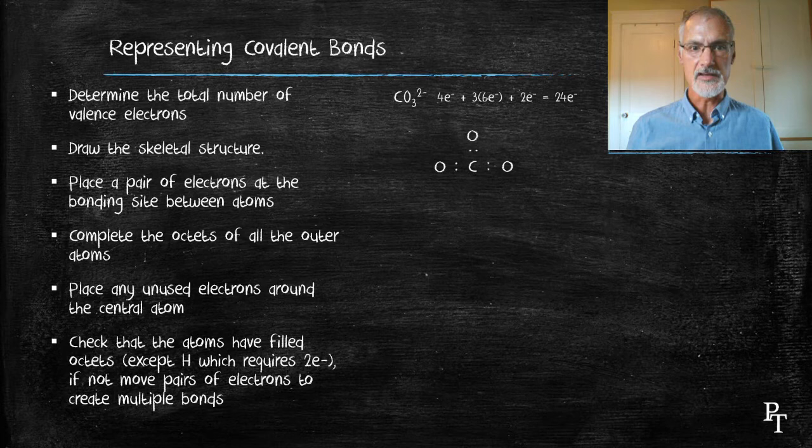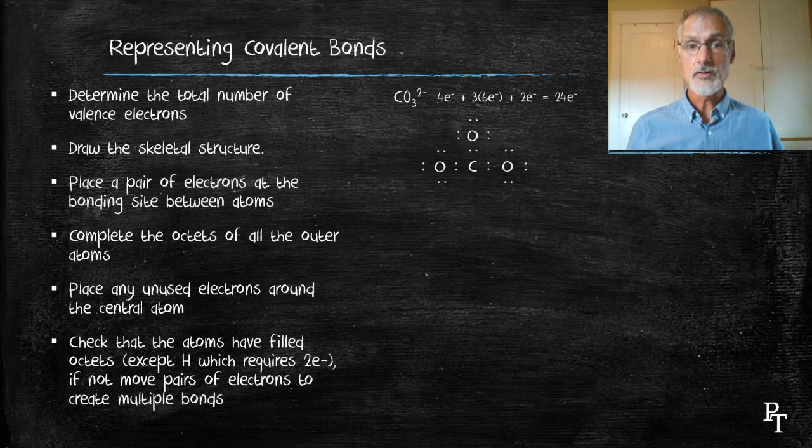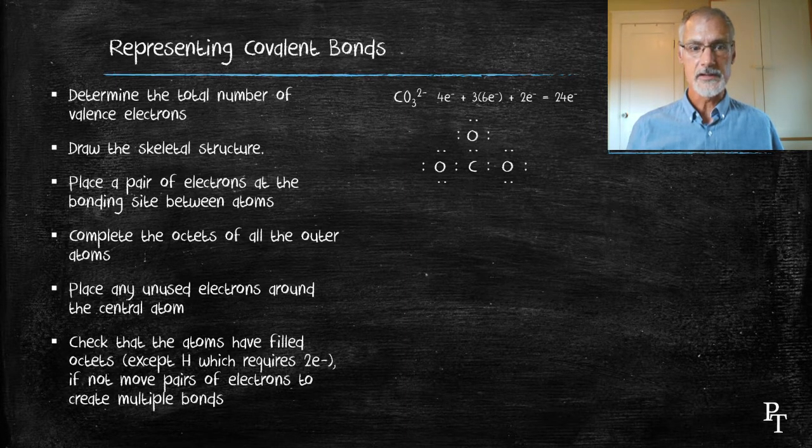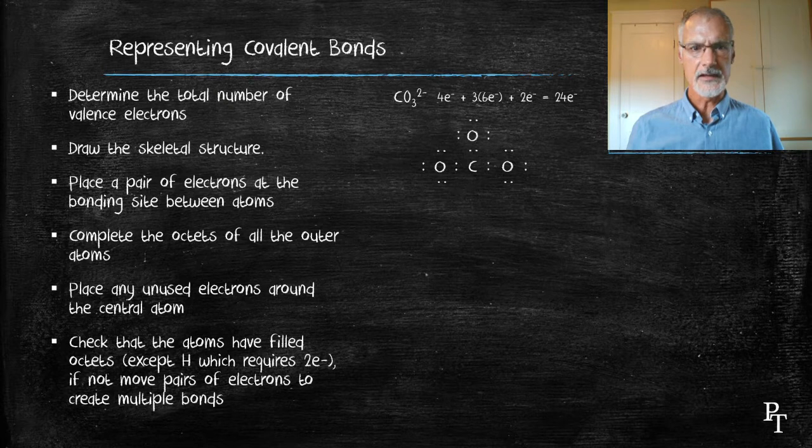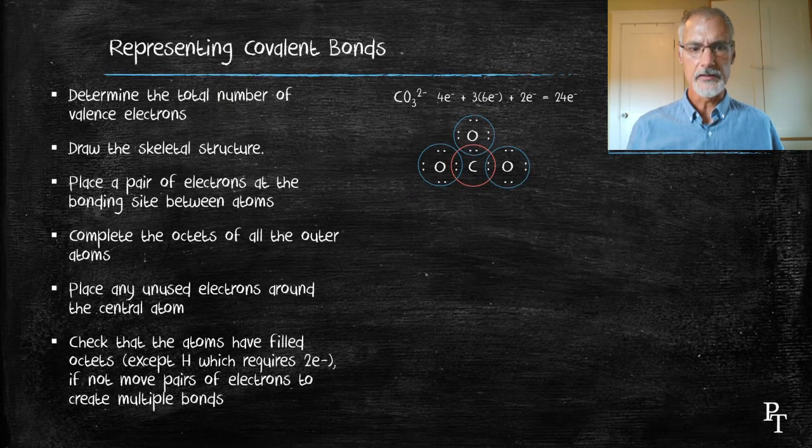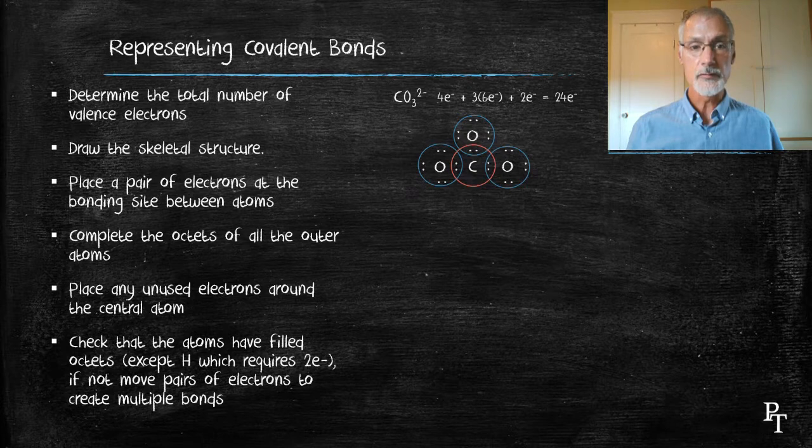My skeletal structure puts carbon in the middle and the three oxygens on the outside. I go to the bonding sites first and now I complete the octets of the oxygens. At this point, I have no further electrons to add to the picture, so I'll now check their stability. Again, the carbon in the middle here is short a pair of electrons. To solve that situation, we'll move in a pair.